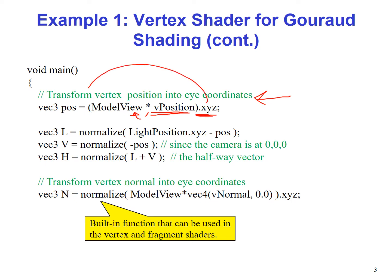Next, we calculate the light vector L by subtracting the vertex positions from the light source, the xyz components of the light source. Then we calculate